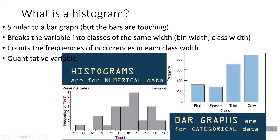With the histogram we have to decide how long we want our bars to be. That has a name — it's called the bin width or the class width. It looks like for this we're going from 55 to 60, 60 to 65, 65 to 70, and so on, so the bin width here is 5. With the bar graph we don't have to do that because it's categorical data — you're just counting the frequency in each one. The y-axis here is frequency and the y-axis here is frequency, so they're both similar in that way.